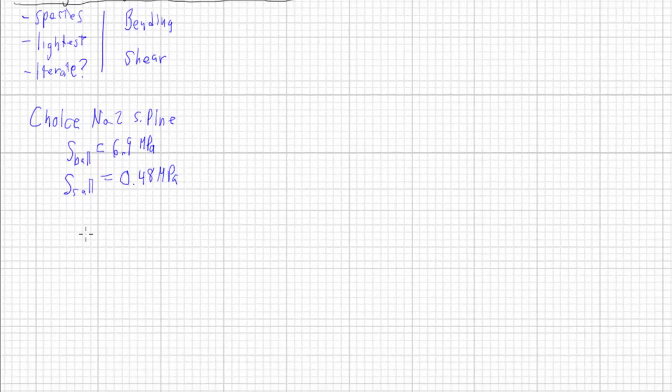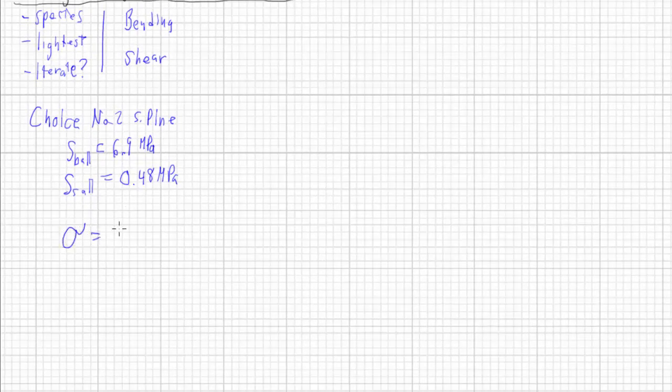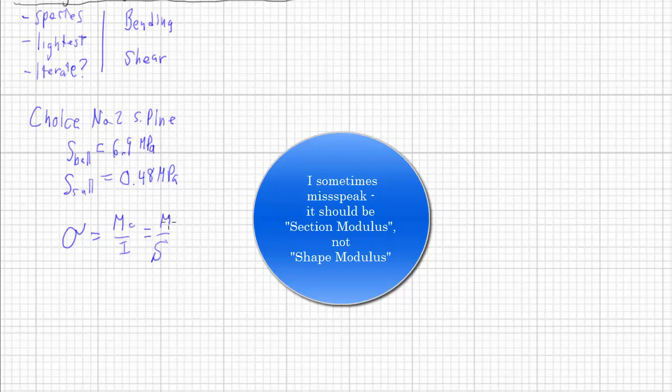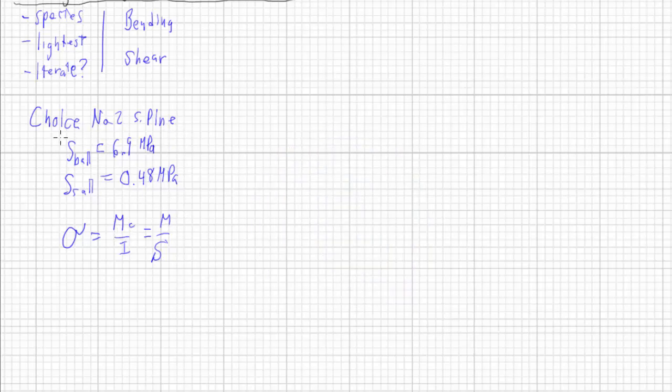Let's look at bending stress first. We're going to use the equation stress equals M C over I, but remember the other equation we had which was M over S. Timber comes in these standard shapes, so we can use this equation which is a little bit simpler. We set our allowable bending stress equal to M over S.